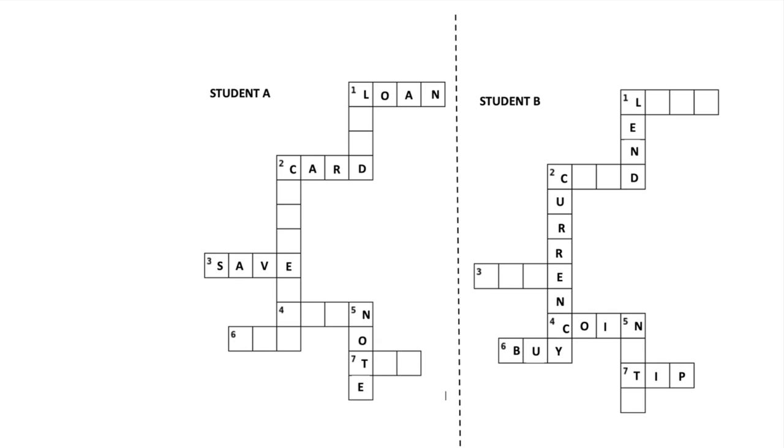And Student B would say, 'What's one across?' and Student A has to make up their own clue for the word 'loan,' or maybe they use it in a phrase like 'I need to take out a...' And so they're kind of helping each other with clues, but they're not allowed to say the words, obviously.